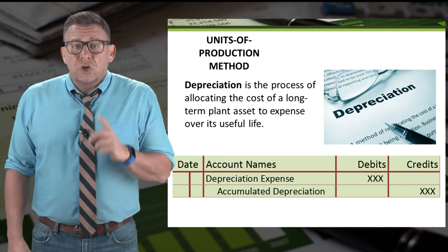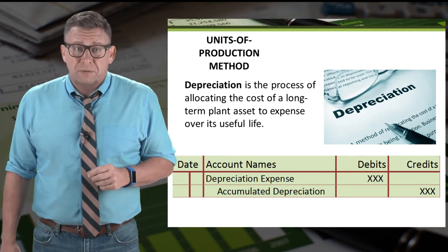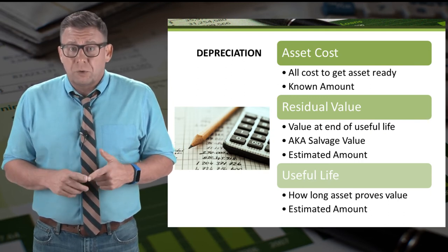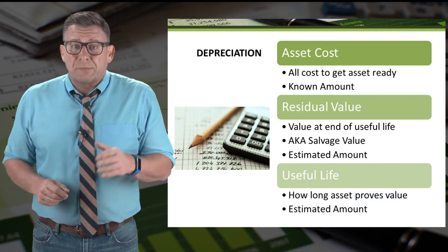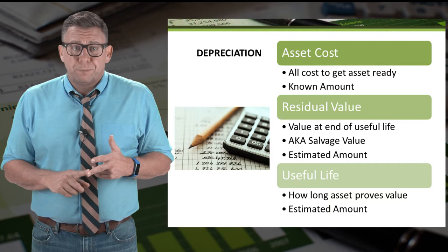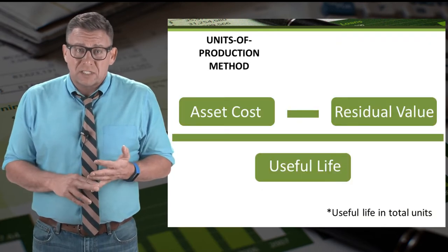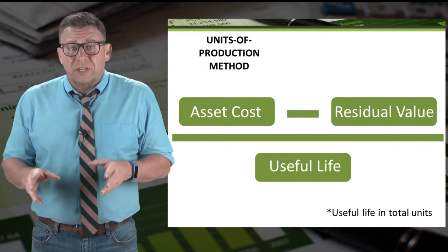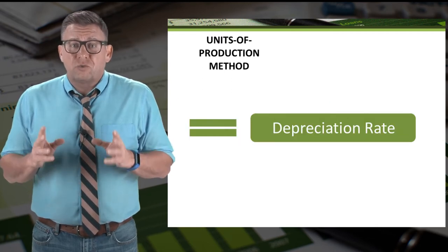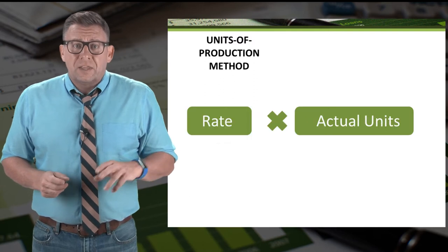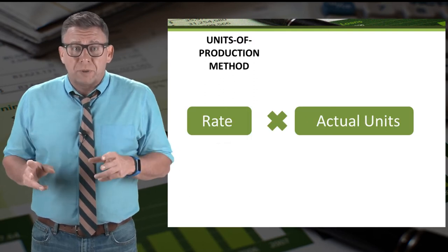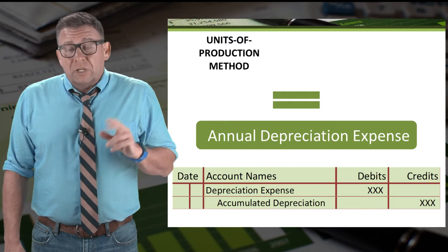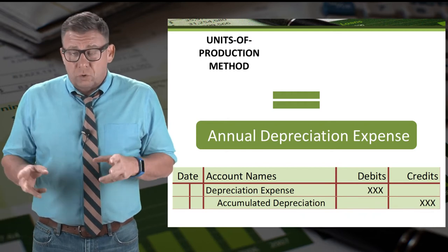In this video, let's learn how to calculate depreciation expense with the units of production method. In order to calculate depreciation expense, we need three values. One is a known amount — asset cost — and the other two are estimated: the residual value and the useful life. The formula for units of production is asset cost minus residual value divided by the useful life in terms of units, which gives us a depreciation rate per unit. Then we take the depreciation rate per unit and multiply that by the actual units of a period, which equals the annual depreciation expense we record in our adjusting journal entry.